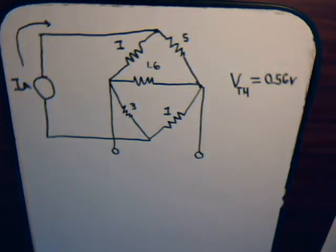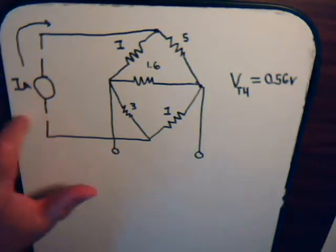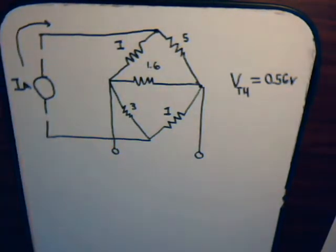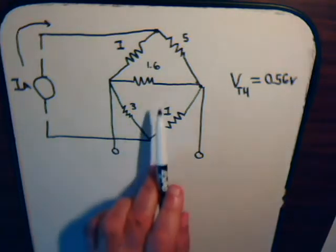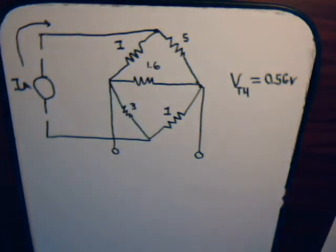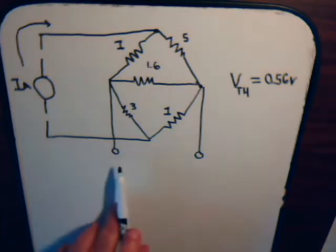Now what we have to do is determine the equivalent resistance. To do that, you remove all current sources and all voltage sources from the circuit. Here we only have a single current source, so we remove it. Now there's no longer any current being supplied to the circuit. Then, with what's left, we ask ourselves: what would be the resistance of this circuit as seen across these terminals?